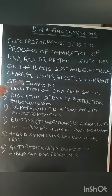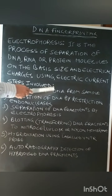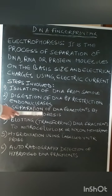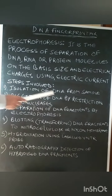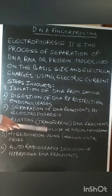The steps involved in Southern blot hybridization are sequential and consist of six steps. First, isolation of DNA from the sample cell. Second, digestion of DNA by restriction endonucleases. Third, separation of DNA fragments by electrophoresis. Fourth, blotting or transferring DNA fragments to a nitrocellulose or nylon membrane. Fifth, hybridization using a labeled VNTR probe. Sixth, autoradiography for detection of the hybridized DNA fragments.